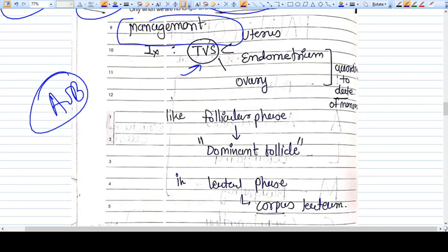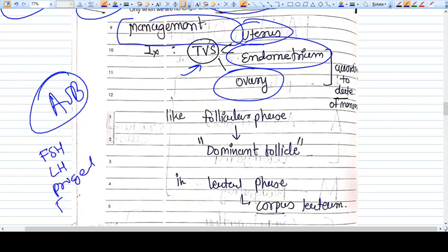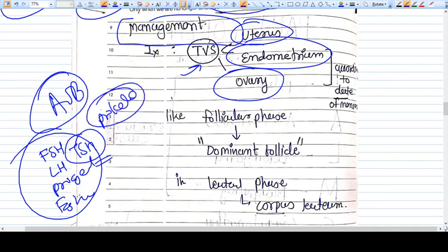In the scan, you see the uterus, the endometrium, and the ovaries. In blood tests, you will do FSH, LH, progesterone, estrogen tests, TSH for thyroid, and prolactin, because all this hormonal dysfunction causes abnormal uterine bleeding. That's why we are testing these hormones.